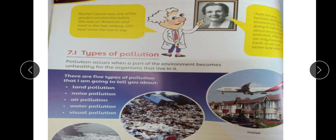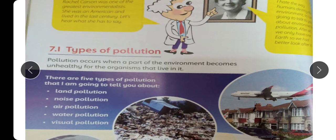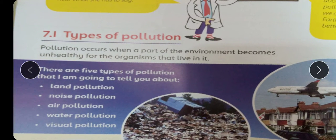You also know that our environment is damaged because of pollution, so we will start with types of pollution. Pollution is defined as: when any part of the environment becomes unhealthy for the organisms that live in it — jab koi bhi hissa jo hai wo maahol ya environment ka koi hissa unhealthy ho jaye rehne walon ke liye — nuksan deh ho jaye, to hum usko pollution kehte hain.